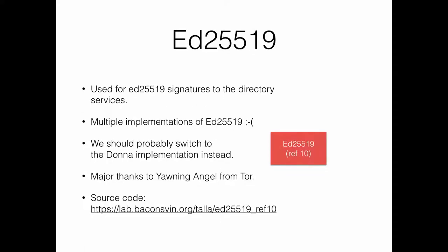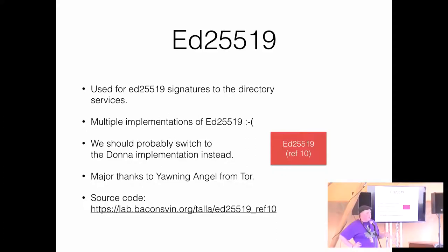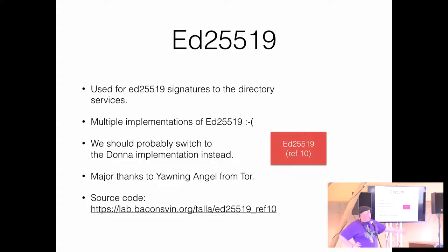We also need ed25519. It turns out there are different versions of this signature scheme where they encode signatures differently — some hash the public key into the final signature and some don't. So we couldn't use ed25519 from Enacl. We had to take the implementation from Tor, lift it out of the repository, and make a small shim to interface with Erlang. Yawning was a great help in identifying the different versions of this signature scheme.